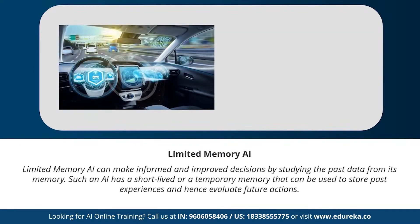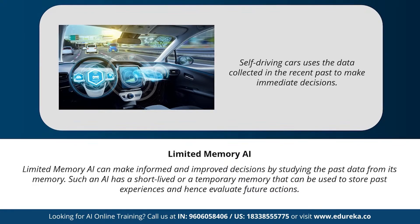Next is limited memory AI. As the name suggests, limited memory AI can make informed and improved decisions by studying past data from its memory. It has a short-lived or temporary memory used to store past experiences and evaluate future actions. Self-driving cars are a prime example — they use sensors to identify civilians crossing the road, steep roads, and traffic signals to make better driving decisions and prevent accidents.